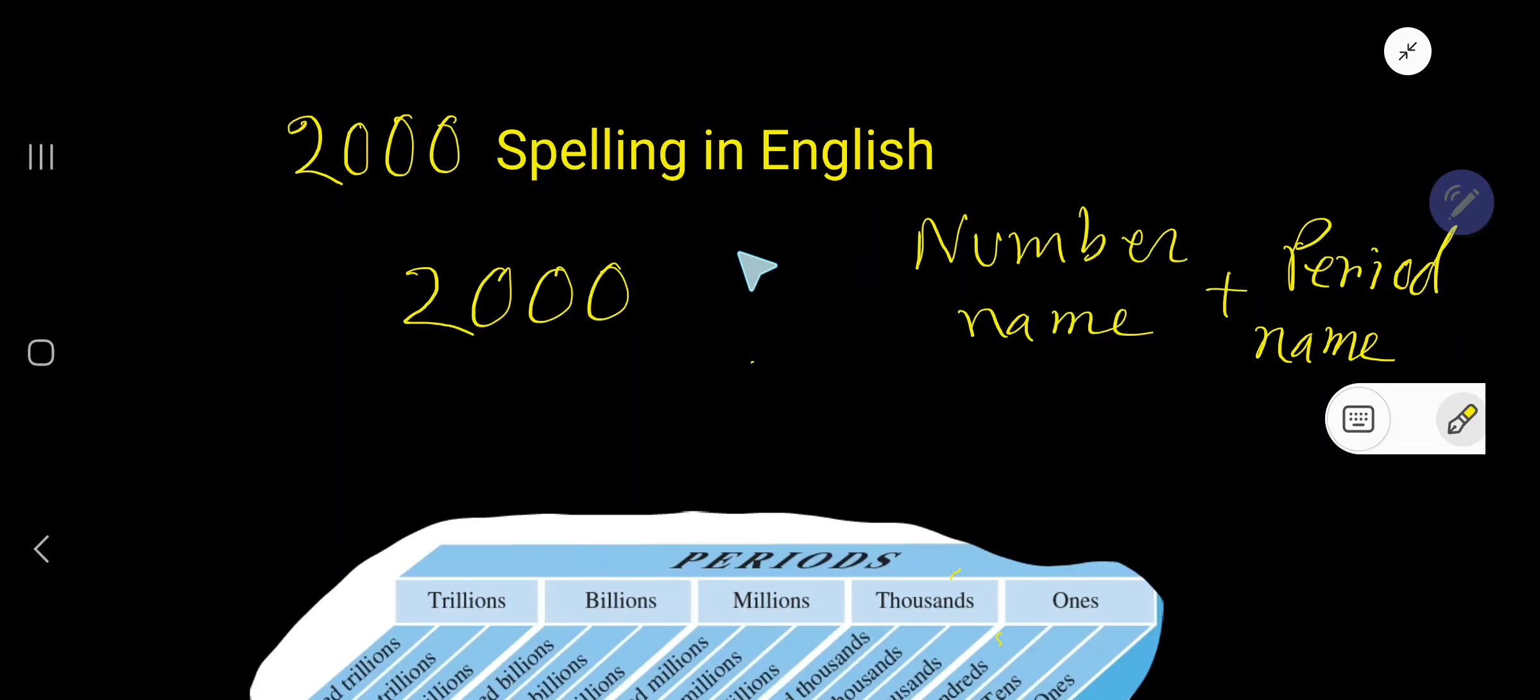Two zero zero zero - spelling in English. To spell this number, we have to follow this rule: number name plus period name. Look, at first you need to make a group taking three digits at a time.